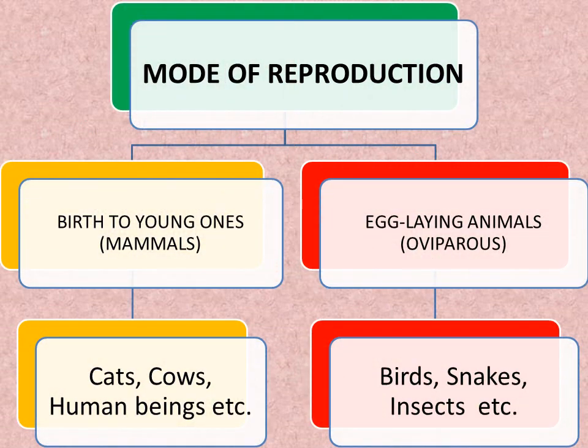The mode of reproduction. There are two modes of reproduction. First is birth to young ones, which is associated with mammals. The animals which give birth to young ones are called mammals. Examples: cats, human beings, and so on.